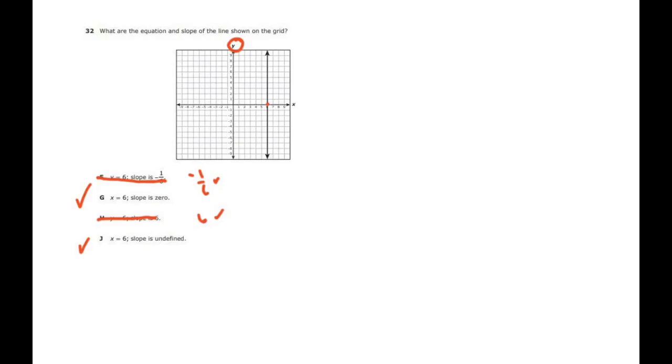So, we have x is 6, everywhere x is 6. I'm going to pick two points. I want to pick this one, which is 6 comma 0, and I want to pick another one, 1, 2, 3, 4, 5. I'll pick that one. That one is 6 comma 5.